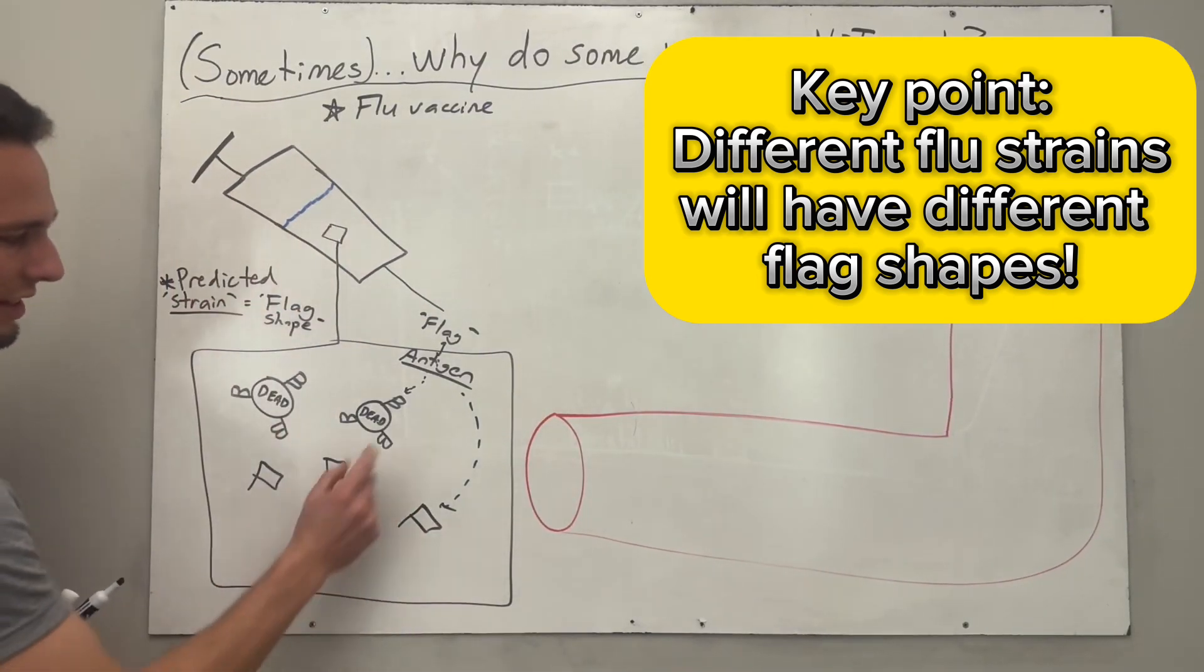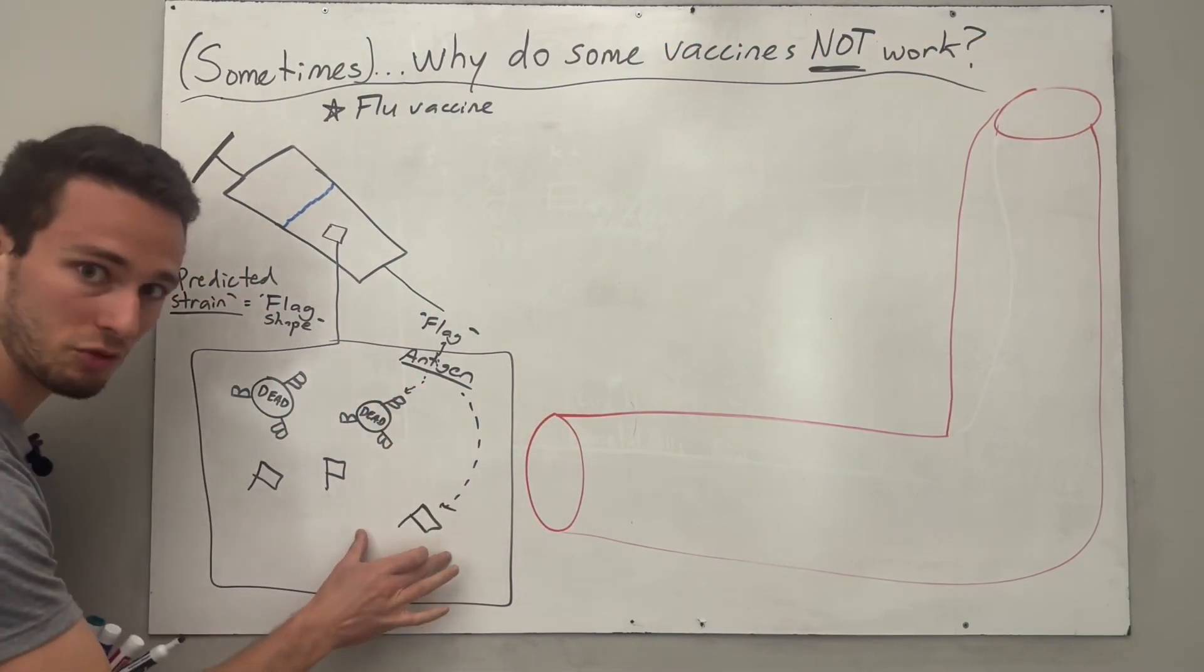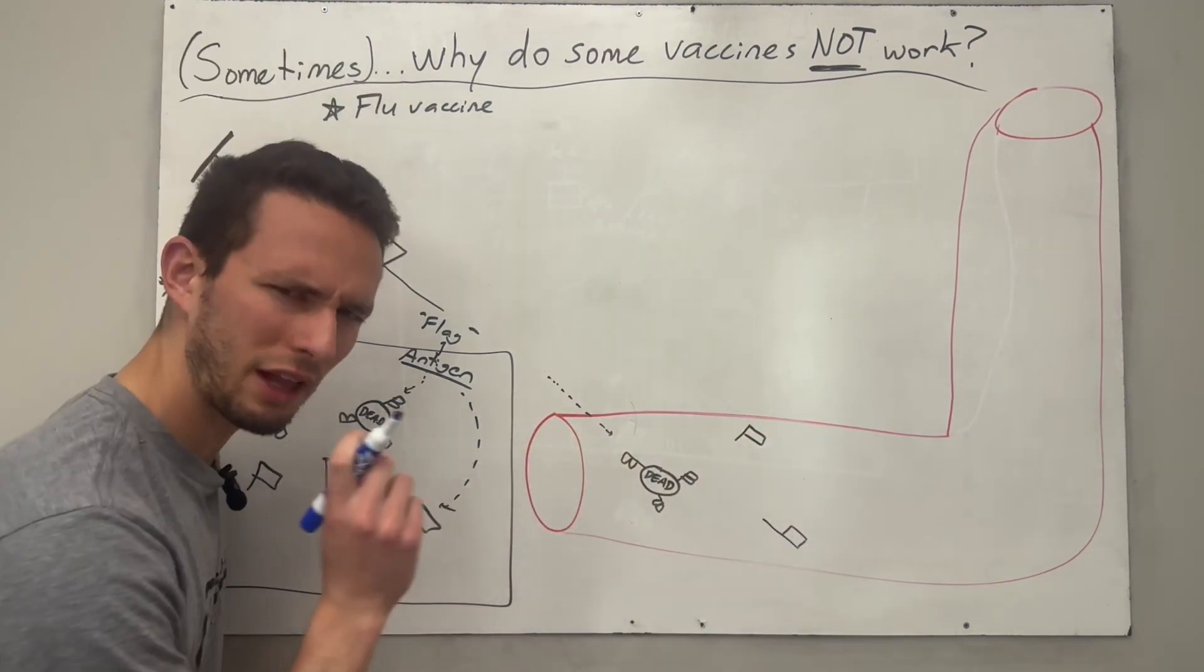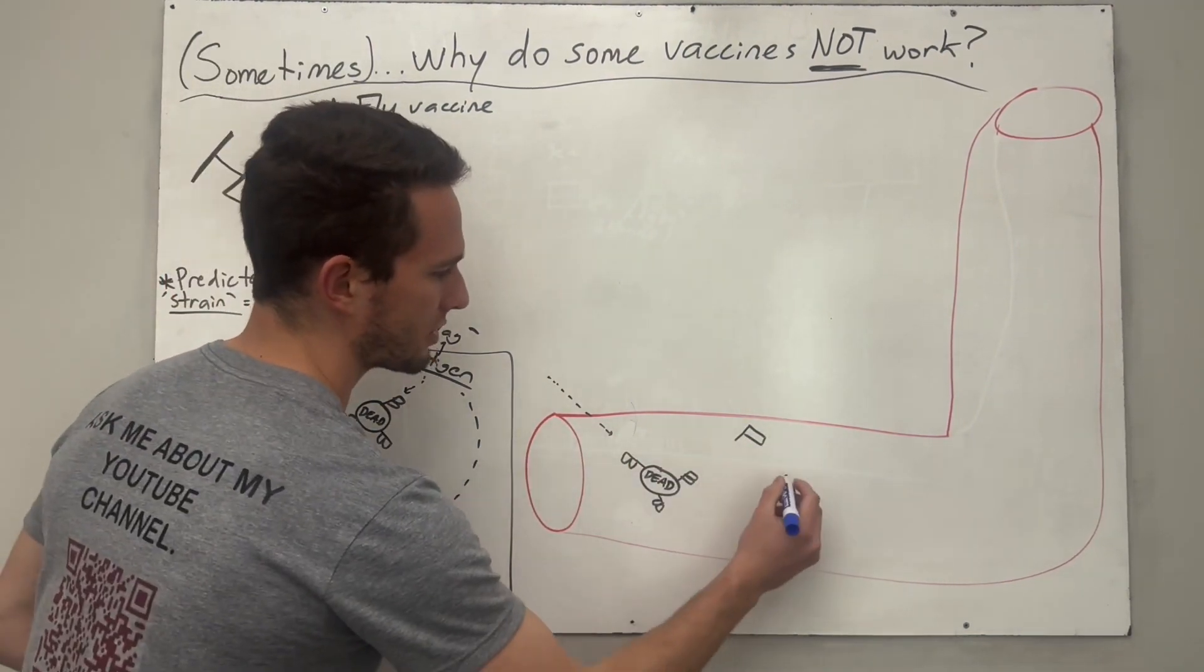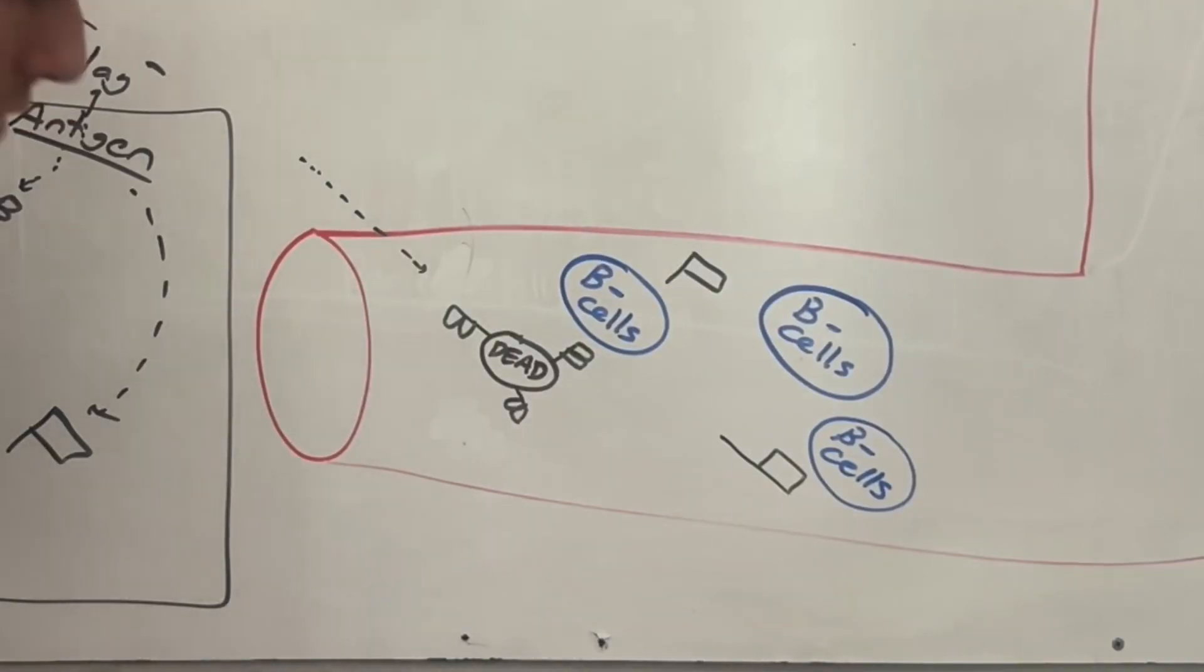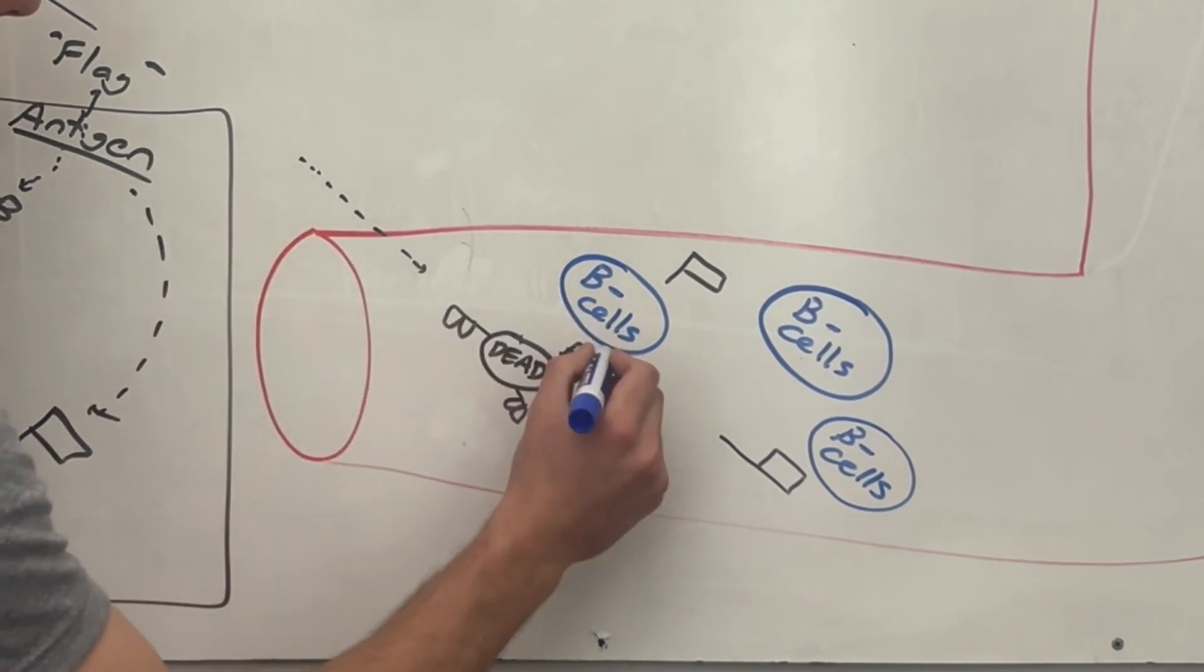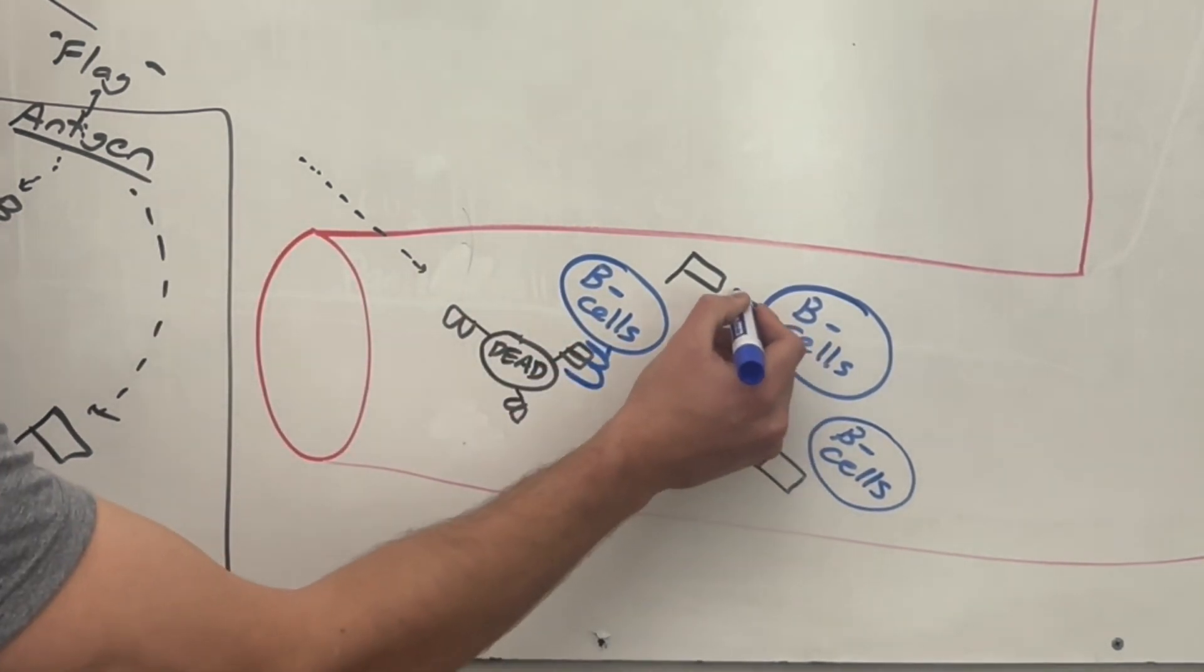So when we inject these dead strains or these antigens by themselves into your bloodstream, what will happen is this: You will have small white blood cells called B cells, and these are going to notice these flags. And certain B cells will actually amazingly already have these little receptor complexes that will fit perfectly onto the antigen surface.